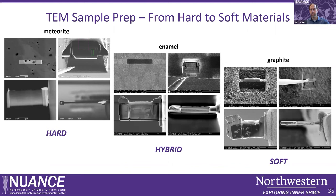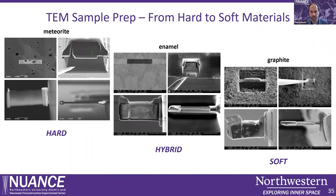We can create TEM samples from a very large range of materials, from hard to soft. This includes a meteorite made of extremely hard material, which takes a long time to prepare but is possible with a gallium ion beam. In the center we have a hybrid material — tooth enamel — which also contains organics. And on the right, a very soft material, pure carbon graphite, from which we were able to successfully create an electron-transparent TEM sample.